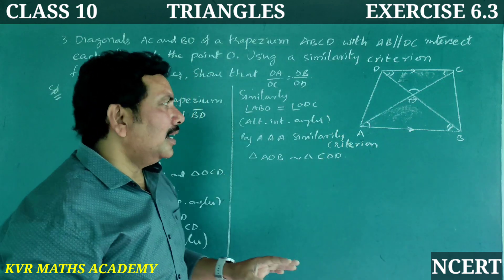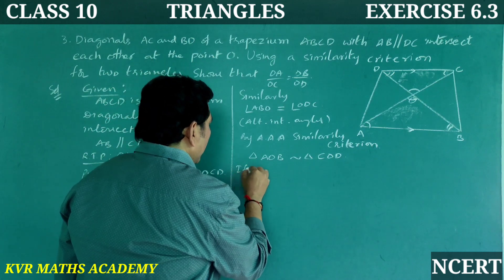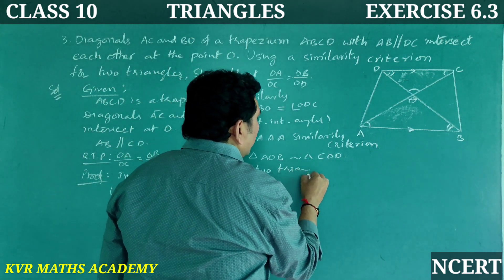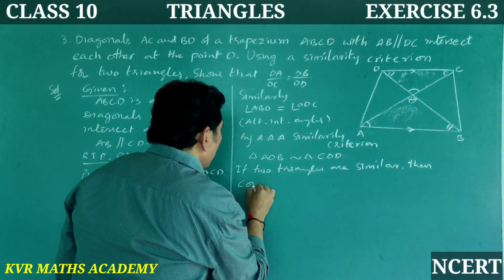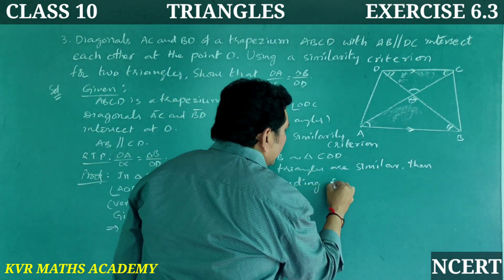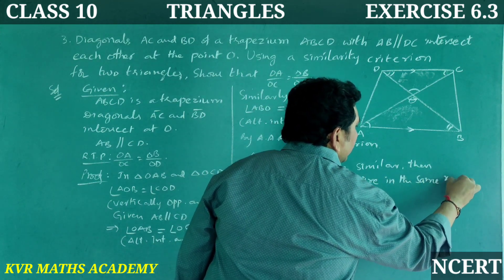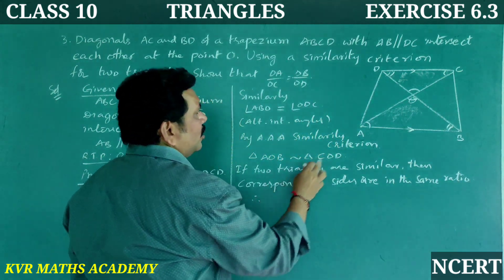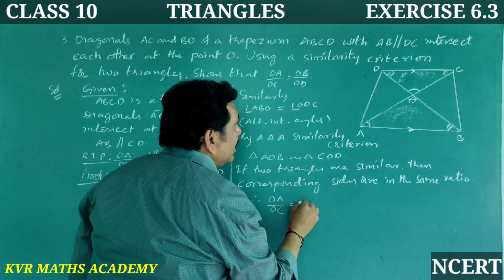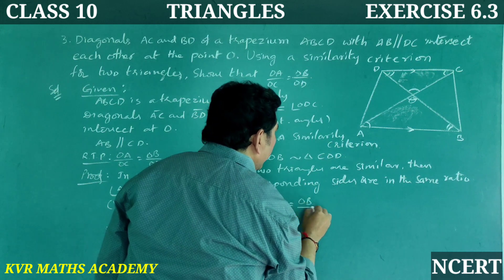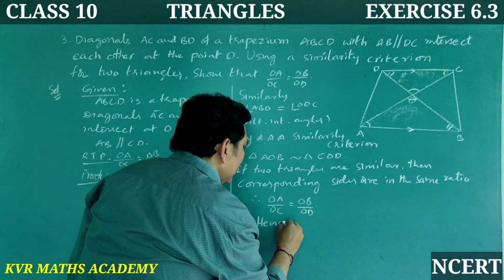If two triangles are similar, then the corresponding sides are in the same ratio. Therefore, from the corresponding sides, OA by OC is equal to OB by OD. Hence proved.